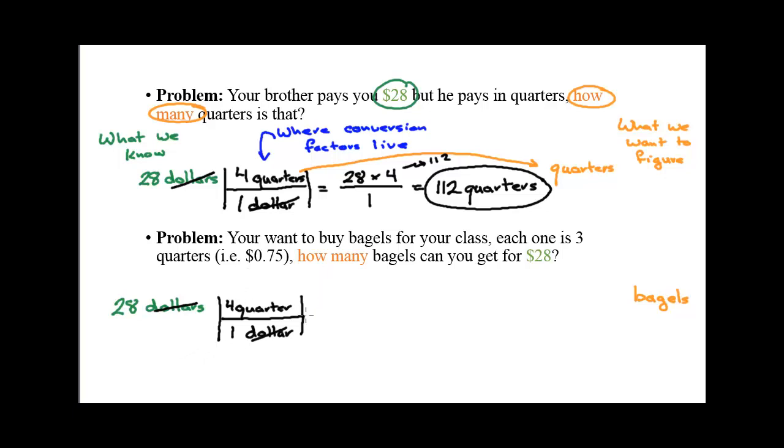Next, I need another conversion factor to allow me to go from quarters into bagels. And so, if we take a look at the problem, it says one bagel equals three quarters. I can make a conversion factor. I can say one bagel over three quarters. Or I can take the reciprocal and flip it, three quarters over one bagel.